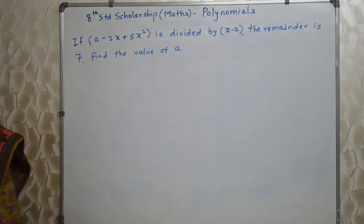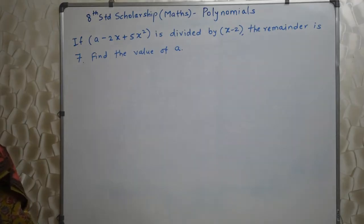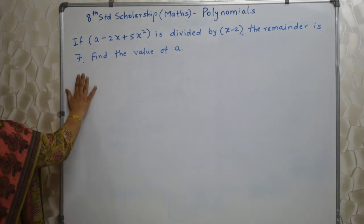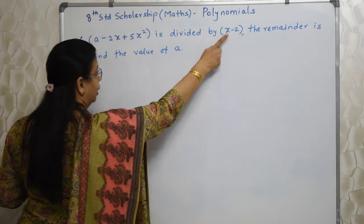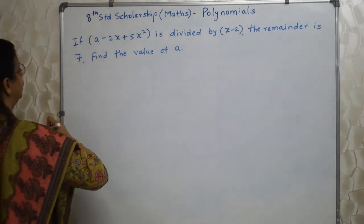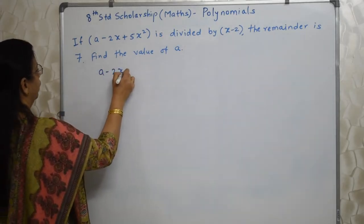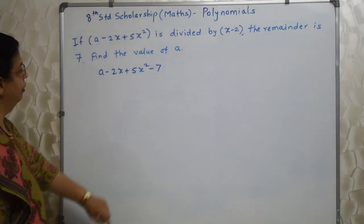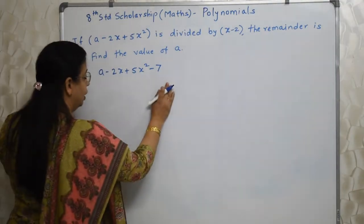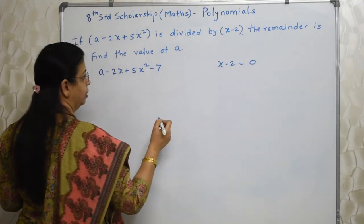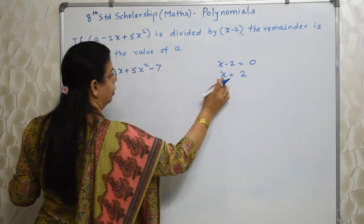Students, read this sum: If a minus 2x plus 5x squared is divided by x minus 2, the remainder is 7. Find the value of a. Here they have given a remainder, meaning 7 is extra. Our job is first to remove that extra — so we subtract 7. Whatever is the value of this will now be completely divisible by x minus 2. So x minus 2 must be the factor, meaning x minus 2 equals 0, so x is equal to 2.